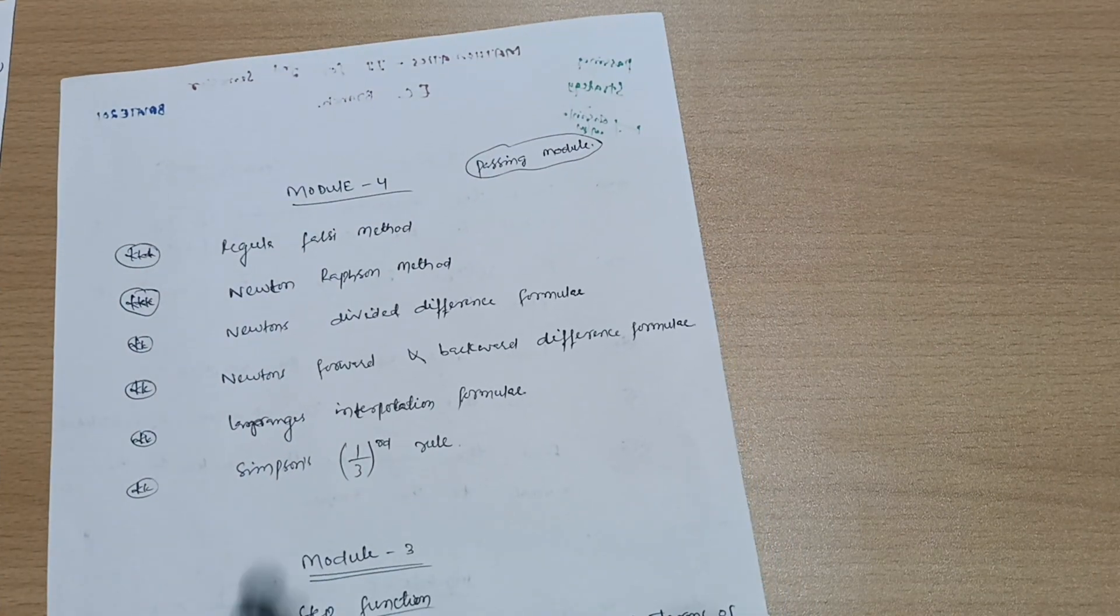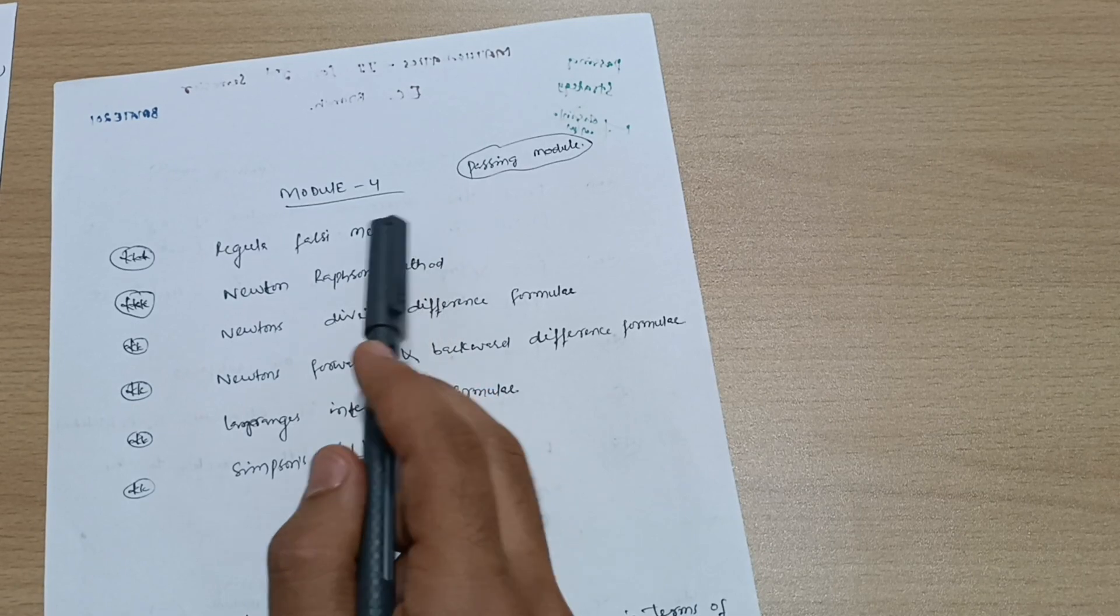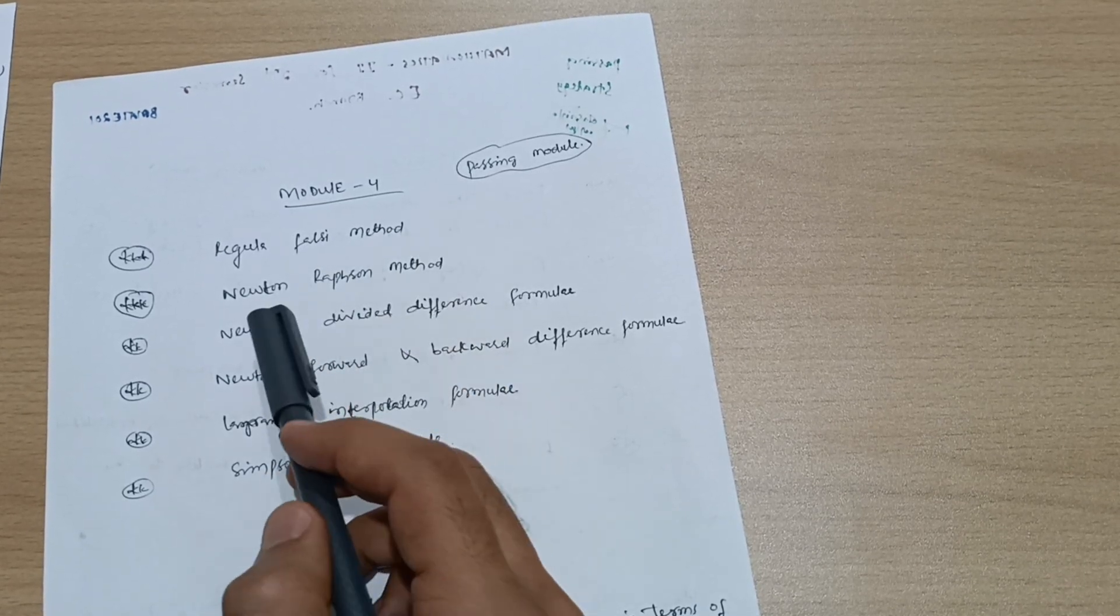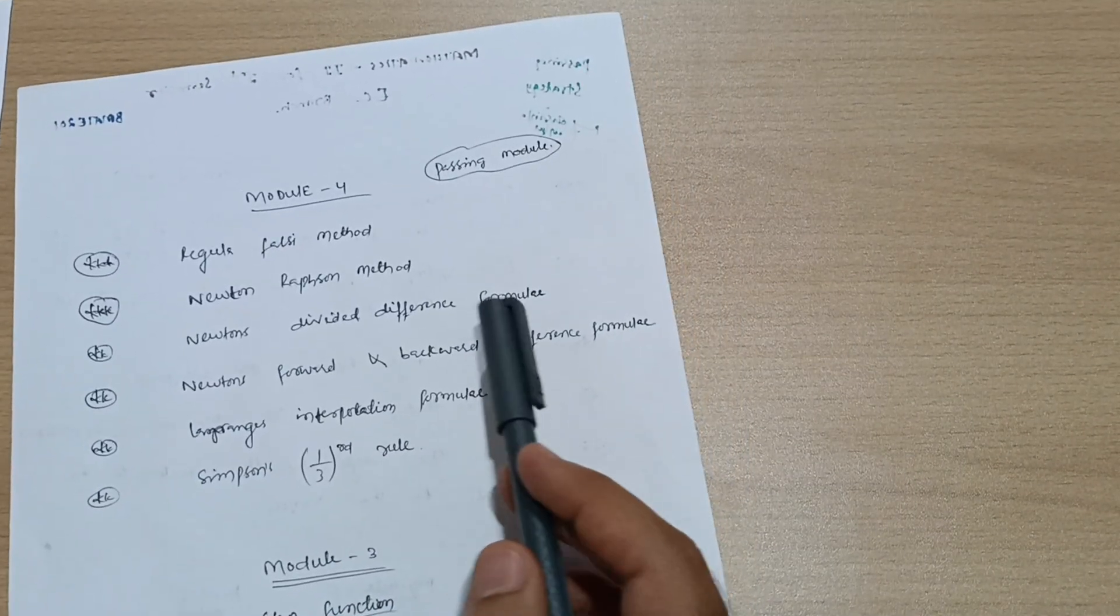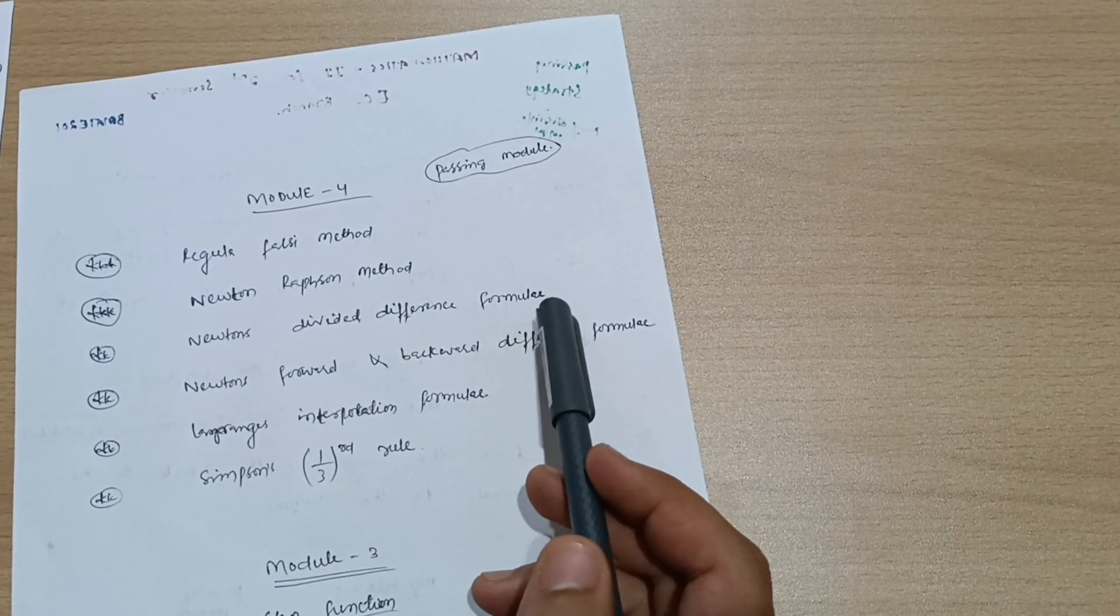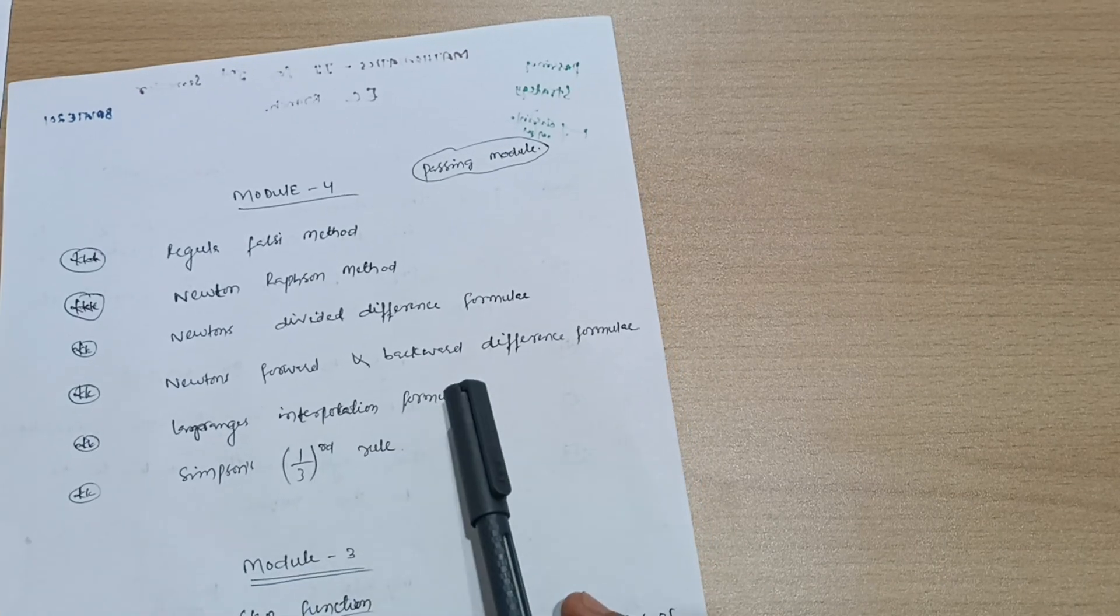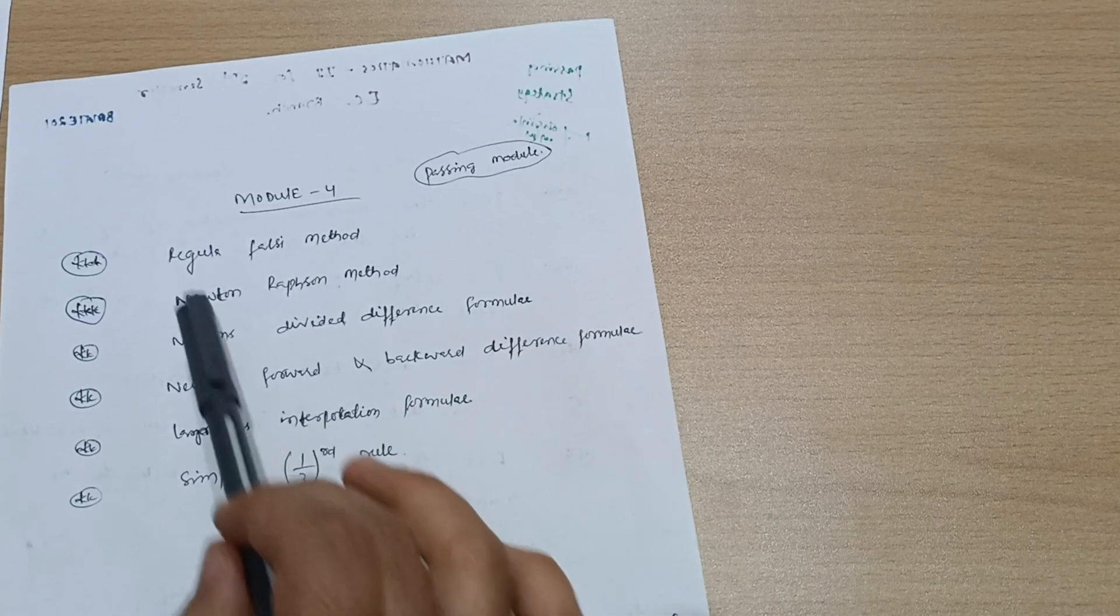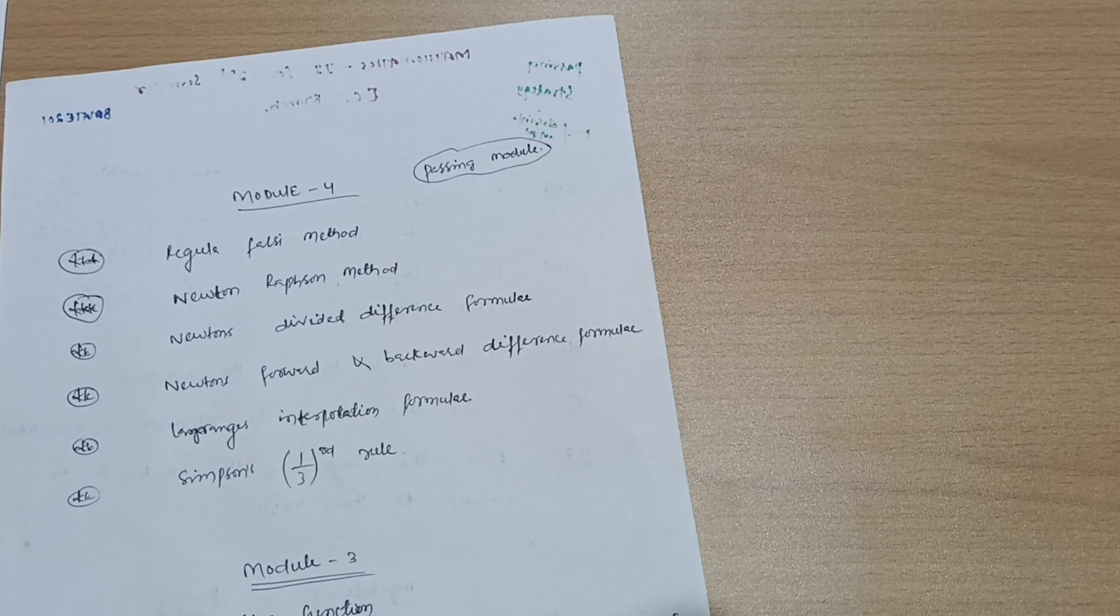Next is module four, which is again a passing module. You have to cover important concepts like Regula Falsi method - definitely seven marks question will be there. Newton-Raphson method, Newton's divided difference formula, Newton's forward and backward difference formula, Lagrange's interpolation formula, and Simpson's one-third rule. These are six topics you have to practice - five problems from each method.